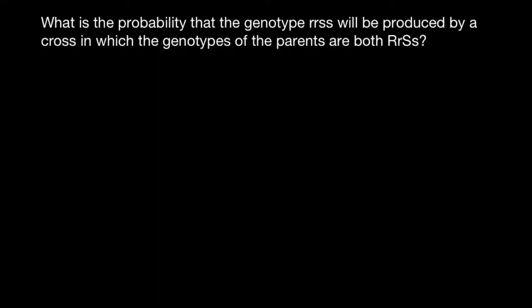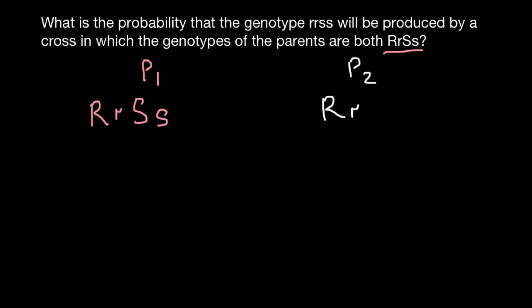So, first of all, we have to list the genotypes of the parents. We have two parents with the same genotype. Parent 1 genotype would be capital R, small r, and capital S, small s. And we have to cross with parent 2, whose genotype would be the same: capital R, small r, and capital S, small s.